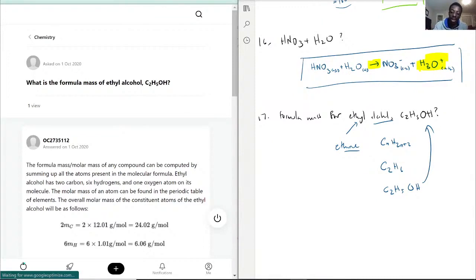Now, with that being said, we have 2 carbons, 6 hydrogens, because you can see here H5 and the OH, or the H there, and 1 oxygen.